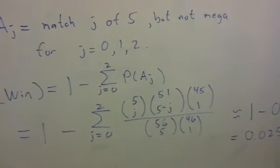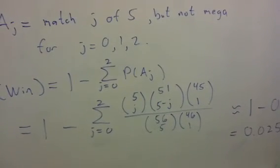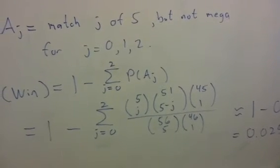56 choose 5 is the number of ways to choose 5 of 56 numbers, and then 46 choose 1 is the number of ways to draw a Mega number.